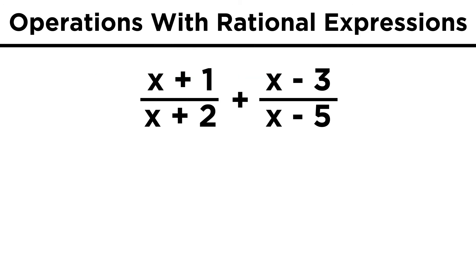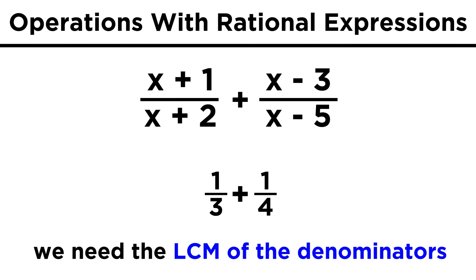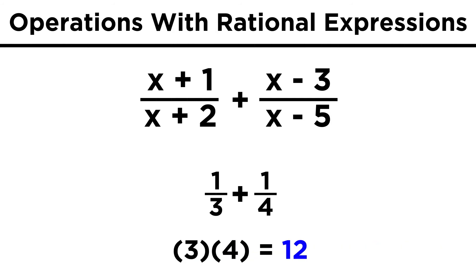Say we have the following expression. We can see that the denominators are different. Well, when we first learned about adding fractions, how did we add one-third and one-fourth together? We had to find the least common multiple. Many times that will just be the product of the two denominators.